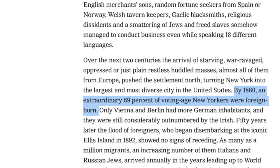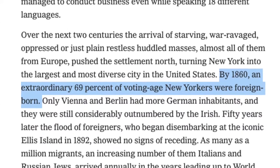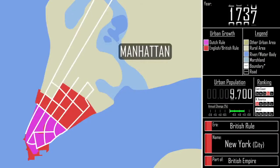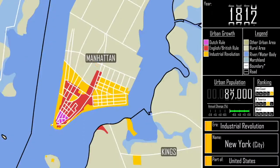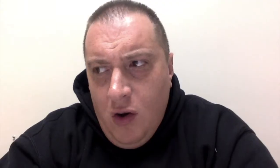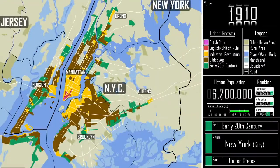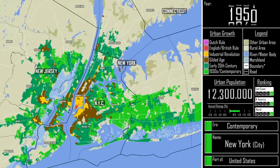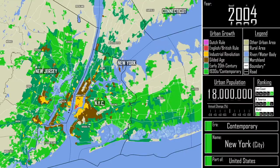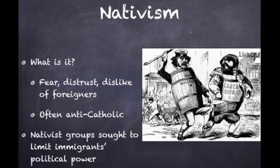Take a look at this quote from the New York Times: by 1860, an extraordinary 69% of voting-age New Yorkers were foreign-born. Keep that in the back of your head and watch that population growth again — look at this boom. Word got out that opportunity was being made fresh daily here. Here's a teaser, but there are a few very important points you need to understand first. 1860: 69% of voting-age New Yorkers were foreign-born. Nativism — get to know the word.